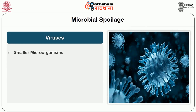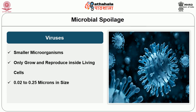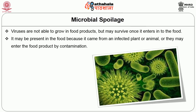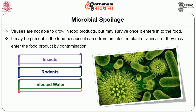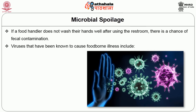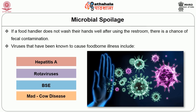Viruses are much smaller organisms that can only grow and reproduce inside living cells. They are only 0.02 to 0.25 microns in size and contain either DNA or RNA and a protein coat to reproduce. Viruses are not able to grow in food products but may survive once they enter the food. Viruses may be present in the food because it came from an infected plant or animal, or they may enter the food product by contamination from insects, rodents, infected water, or food handlers. If a food handler does not wash their hands well after using the restroom, there is a chance of fecal contamination. Viruses that have been known to cause foodborne illness include Hepatitis A, Rotavirus, and BSE or mad cow disease.